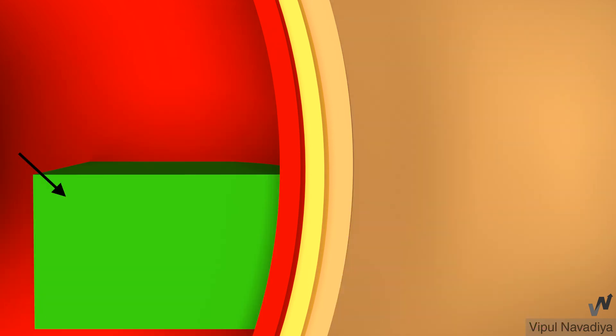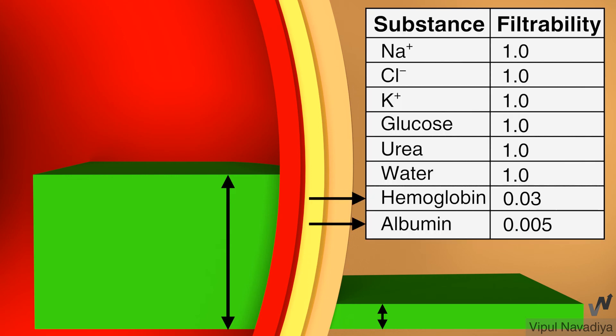Plasma proteins instead are very large in size. Apart from size, negative charge on protein molecules also prevent their filtration as they are repelled by negative charge on basement membrane and podocytes. Consequently, their filtration is negligible. So their concentration in filtrate is very less as compared to plasma. For example, filterability of hemoglobin is 0.03 and of albumin is 0.005.